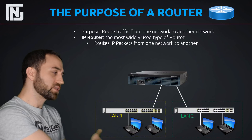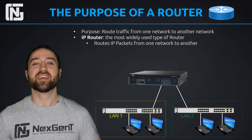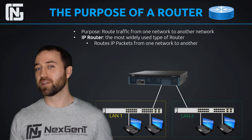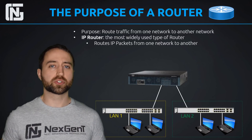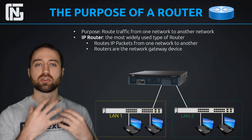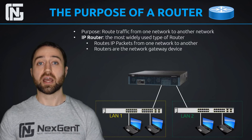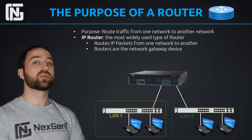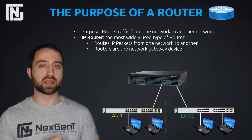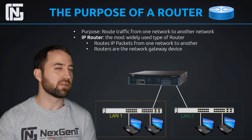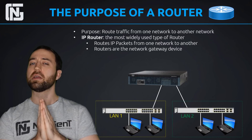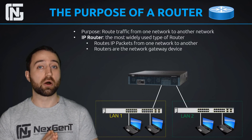So that is the function and purpose of a router: to route traffic from one network to another. Because routers route traffic from one network to another, they are said to be the gateway device or the network gateway. If I'm on LAN 1 and need to send traffic out to another network, I send it to my gateway device — the router. Most of the time we call this the default gateway. When you hear that term, it's normally talking about a router or some type of device that can do routing, which could even be a firewall.